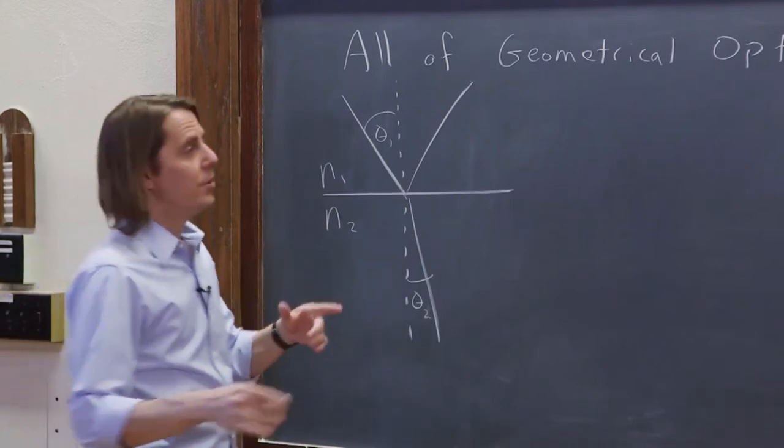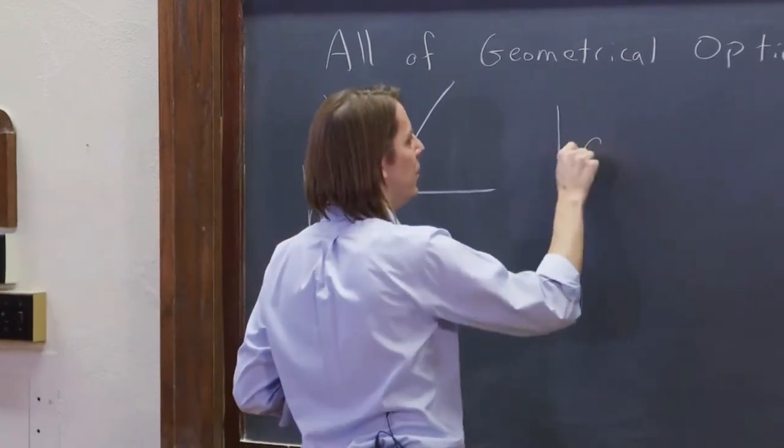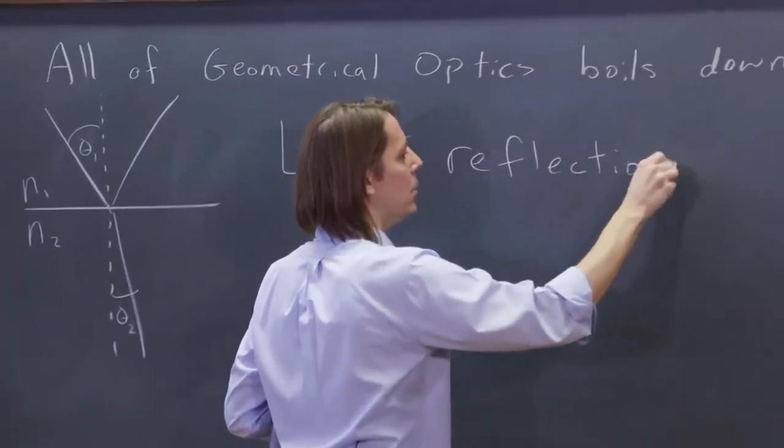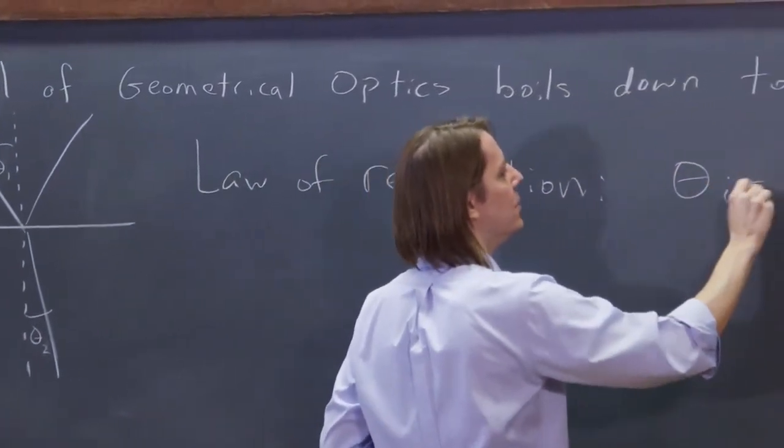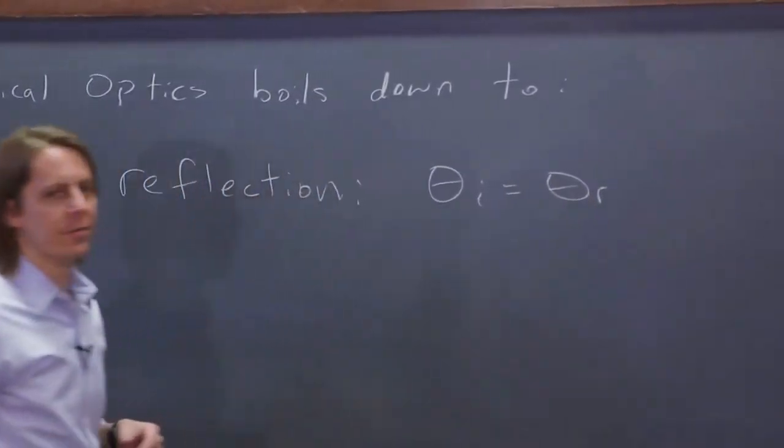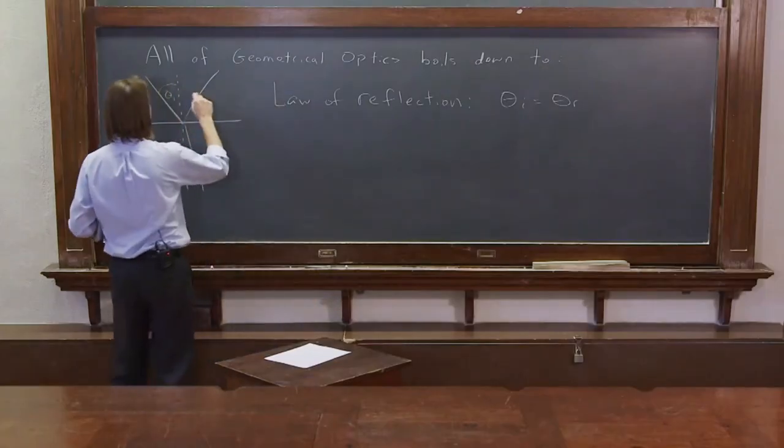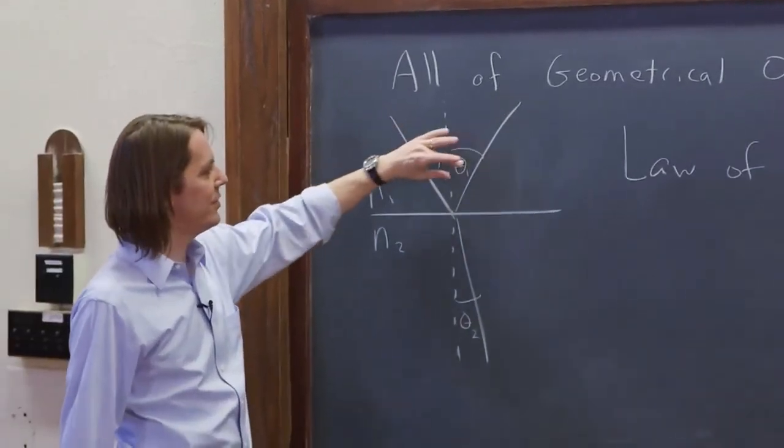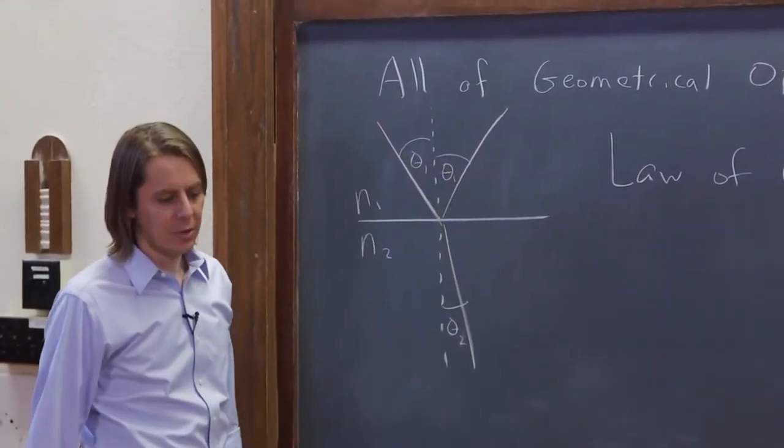So the two laws, it all boils down to two laws. One is the law of reflection. And that is that the incident angle equals the reflected angle. So if we're going to draw that here, we would just point out this also will be theta one. If you come in at some angle of incidence, it's equal to the angle of reflection.